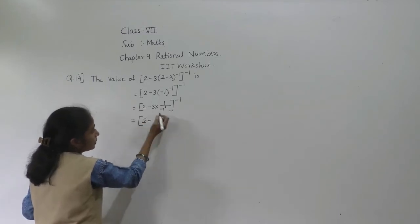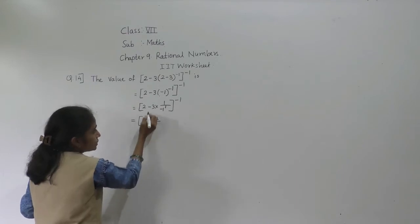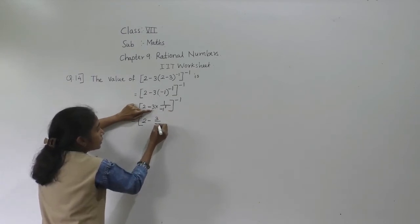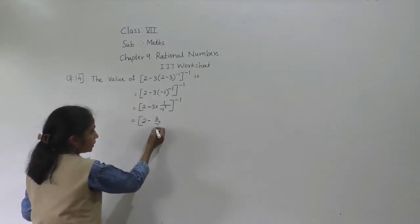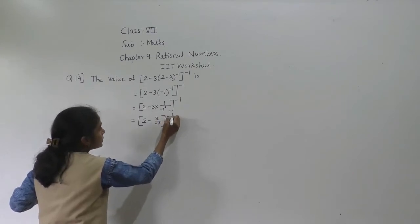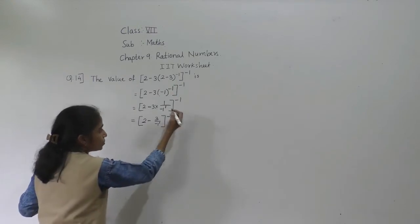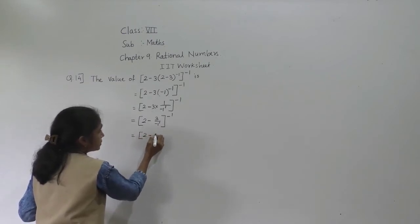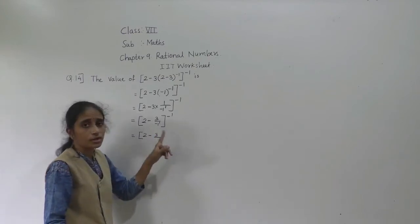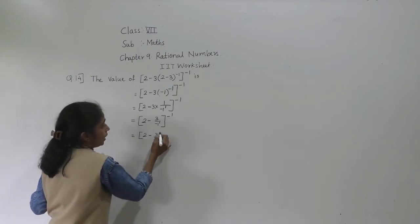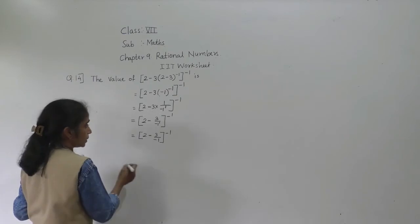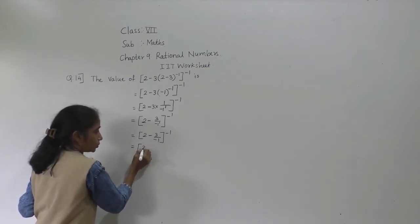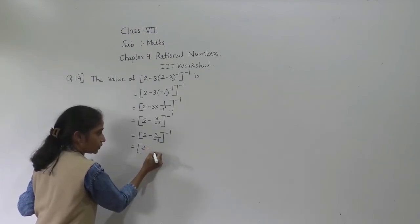So 2 minus 3 — the result of the round bracket is minus 1, raised to minus 1. To remove the minus sign, write 1 upon minus 1 raised to 1. So the numerator is minus 3 into 1 equals 3. Denominator is minus 1 raised to 1. Then 1 raised to 1 equals 1 times, so it equals minus 1.